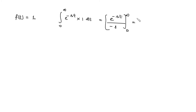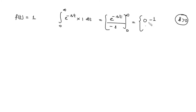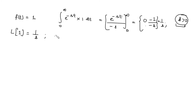When you substitute the upper limit infinity, you get that value is zero provided s is strictly greater than zero. When you substitute t equal to zero, you get one upon minus s, so this comes out to be one by s. Therefore, the Laplace of 1 is 1/s, provided s is strictly greater than zero.